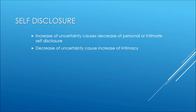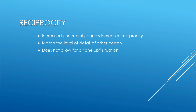The fourth axiom is self-disclosure. An increase of uncertainty causes a decrease of personal or intimate self-disclosure, while a decrease of uncertainty causes an increase of intimacy. Fifth is reciprocity: increased uncertainty equals increased reciprocity. You match the level of detail of another person, but this does not allow for a one-up situation.